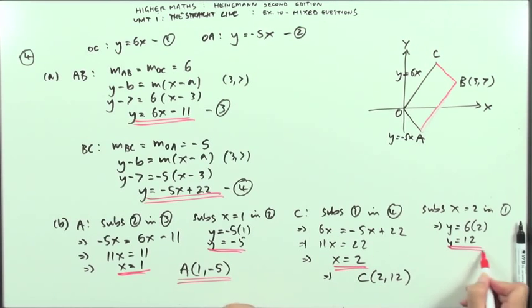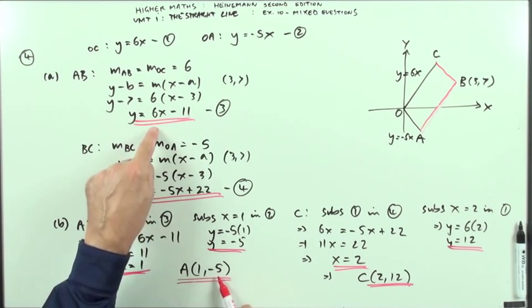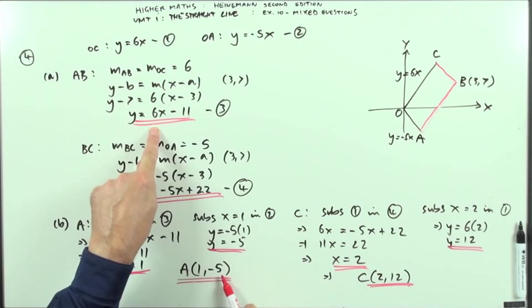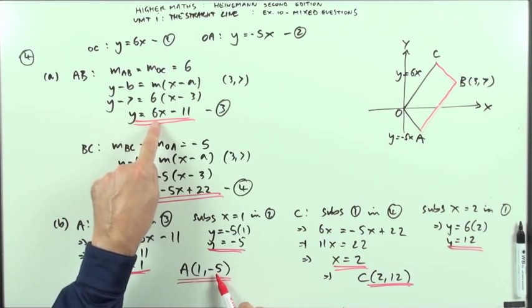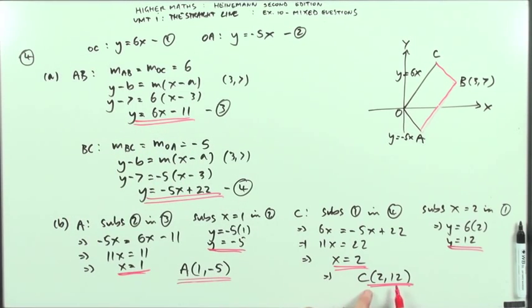Whenever you're solving some simultaneous equations, I used equation 2 to find the Y coordinate so I should really check those points with equation 3. Negative 5 is 6 minus 11, yes. And the same here, I've got C by using equation 1 so I should check it in equation 4. 12 is equal to negative 10 plus 22 and it is. So there's question 4.